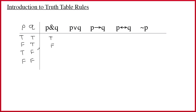What if it's true that Janet likes Jell-O but false that Brenda likes malt liquor? The conjunction is false. And what if they're both false? Also false. This just is what the ampersand is — it's a rule that says if you give me two true sentences, I'll give you a true output. If you give me any other combination, I'll give you a false output.